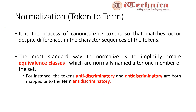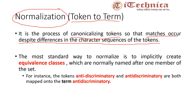For that, we have to perform normalization. Normalization is the process of converting tokens to terms — or more formally, it is the process of canonicalizing tokens so that matches occur despite differences in the character sequences of the tokens. The most standard way to perform normalization is generating equivalence classes, which are normally named after one member of the available set. For example, suppose we have the token 'anti-discriminatory' and a second token 'antidiscriminatory' without a hyphen — if we normalize both tokens, they are both mapped onto a single term: 'antidiscriminatory'.